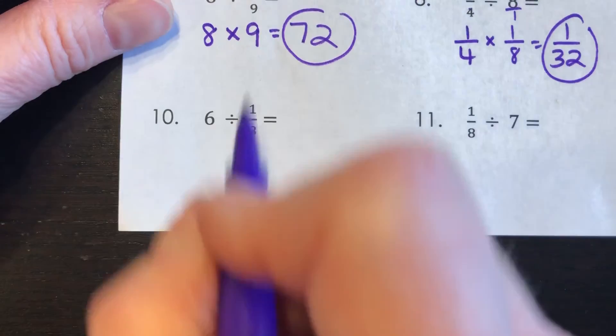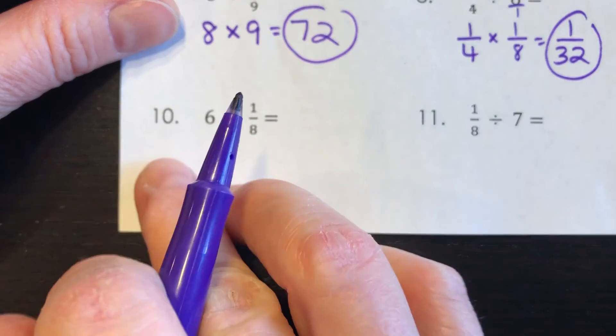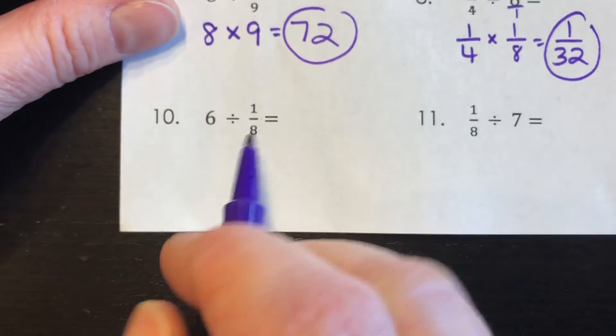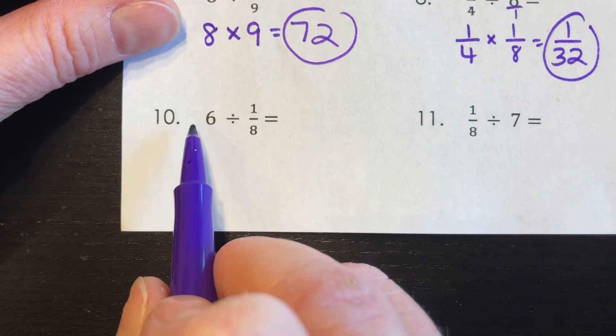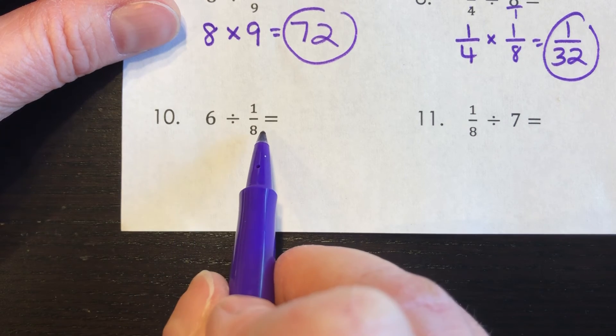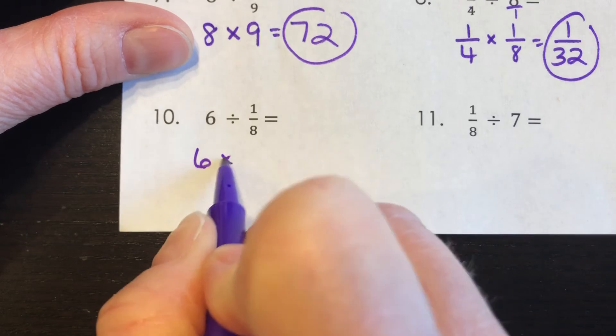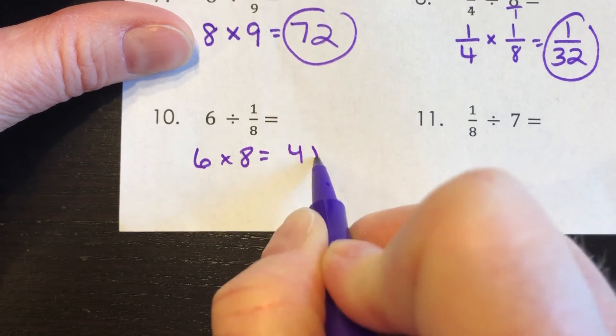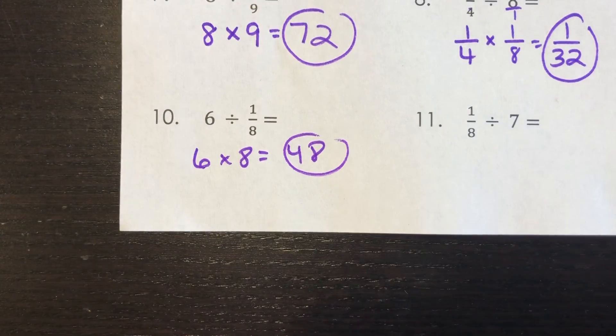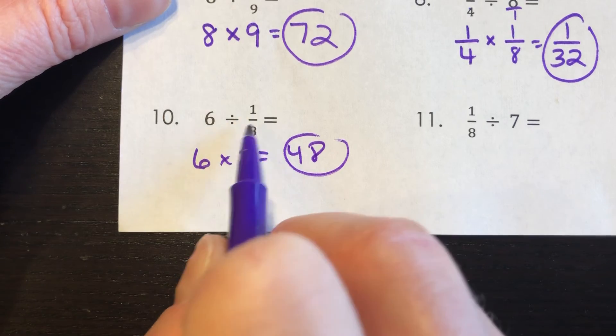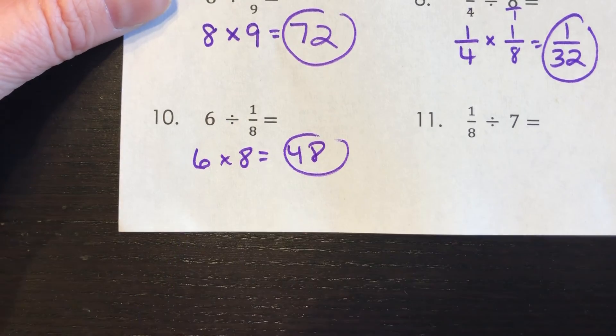Number 10, moving right along. Six divided by one eighth. So if you take six divided by one eighth, I'm asking you how many eighths there are in six. And I know there's eight in one. So in six, there would be six times eight is 48. Six times eight is 48. So we multiplied by the reciprocal because eight over one is the same is eight.